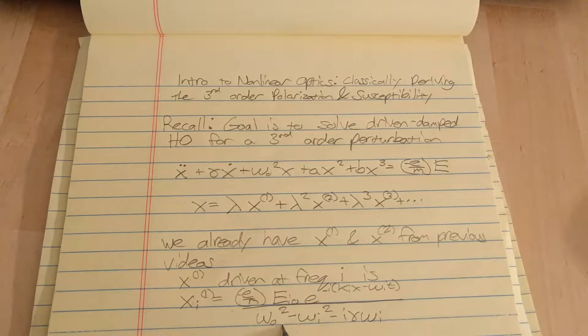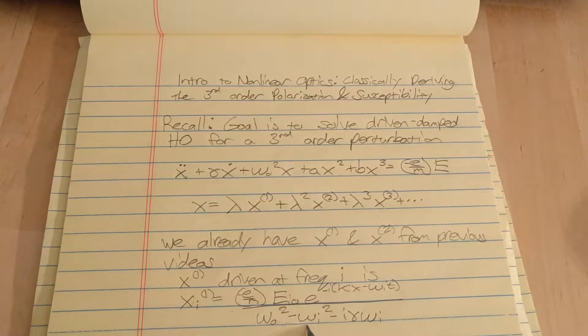So it's driven at some constant times the electric field that's incident times this denominator function here. And in previous videos I was calling this d of omega sub i.